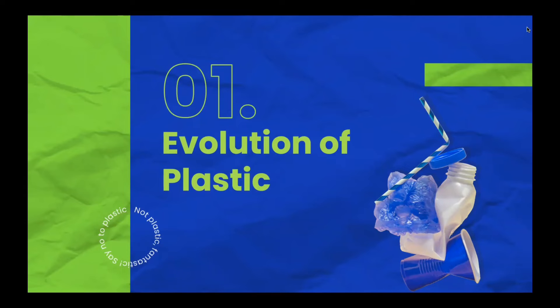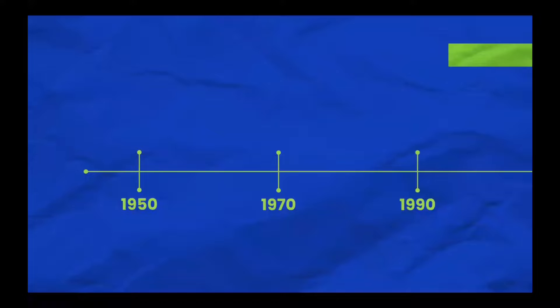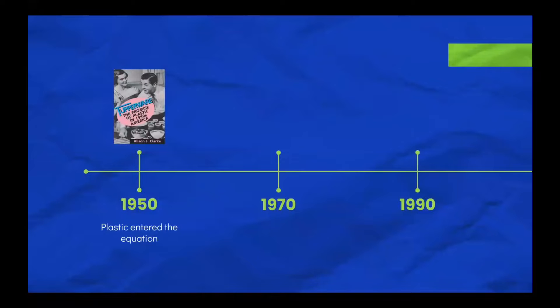Before we look into the alternatives to plastic, it is important to go over the timeline of plastic's evolution, especially the evolution of our own thinking when it comes to plastic. In 1950, there was a massive shift in plastic consumption as it was introduced to the food sector.